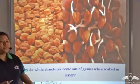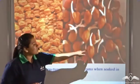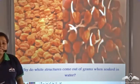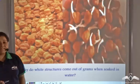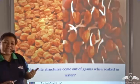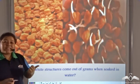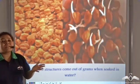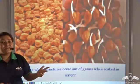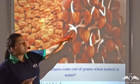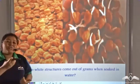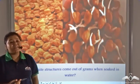If you have noticed, you will see white structures come out from the gram seeds when soaked in water. Why is it so? This is because the gram seeds have embryo inside. When this embryo gets all the favourable conditions like water, oxygen and proper temperature, they germinate to form a new plant. The white structures that you see are nothing but a new plant that is germinating from the embryo.